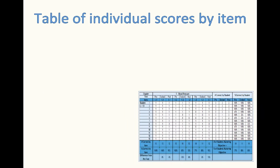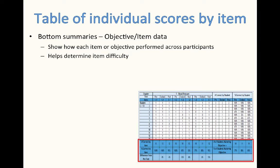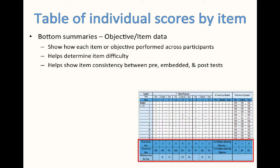We're going to start with a table of individual scores by item. First of all, look at the bottom summaries. This will give you your objective and item data. It'll show you how each item or objective performed across all participants, helps determine item difficulty, and helps show the item consistency between the pre-embedded and post-test.